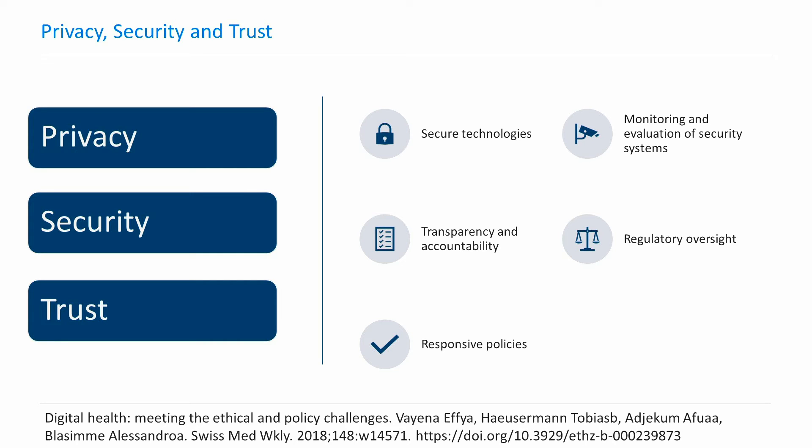Privacy is defined as the freedom from unauthorized intrusion, which entails a person's right to not have their personal information disclosed or used without their permission. Security is the obligation on the part of all entities holding and exchanging personal health information to take all necessary measures to prevent any unintended disclosure of information. It also includes protection against unauthorized alterations to the data and should include auditing and logging of processes carried out on or with the data. Though privacy and security are important, they do not equal trust — that requires more. The main elements of trust include transparency, accountability, benefit sharing, and clarity around data ownership and data control.